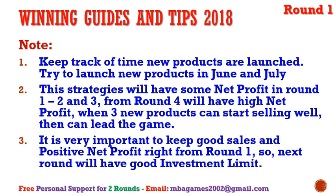For this winning guide for round one, with these tips you can start round one with good and right decisions so you don't have errors to fix in later rounds. Just keep going — add more products, increase capacity, increase automation, set a good price, and set a good budget for promotion and sales. We can increase sales very fast and get good net profit from round three or four. Keep track of when new products are launched — try to launch in June or July, sometimes August or October is okay.